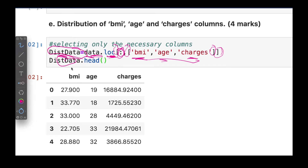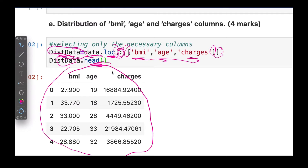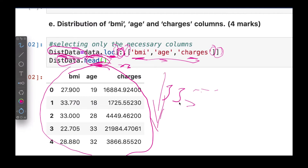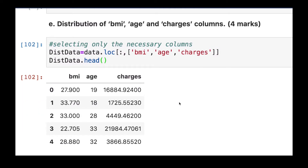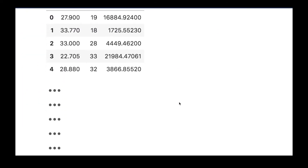If you call `this_data.head()` you can see the first five rows of what we've selected. We have over 1,300 rows of data, but `.head()` just shows the first five. If you remove `.head()` you'd see all the rows.